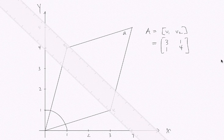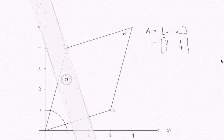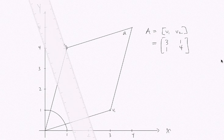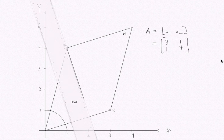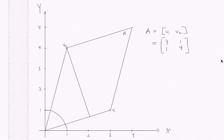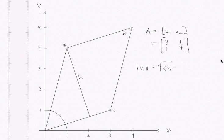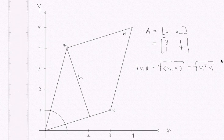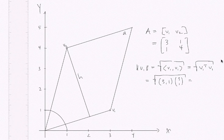As we know from high school, the area of a parallelogram is given by the length of the base — which is the length of the vector v1 — times the height, which is the length of the vector h. The length of v1 is the square root of the inner product of v1 with itself, or v1ᵀv1, which is the square root of (3·3 + 1·1) = √10.